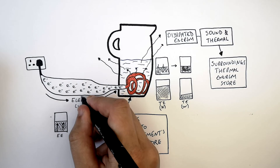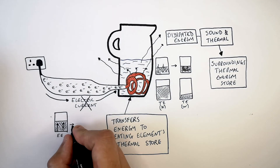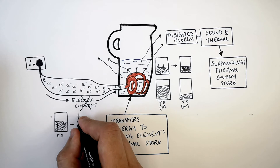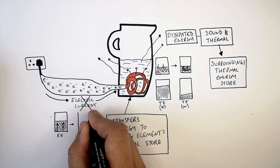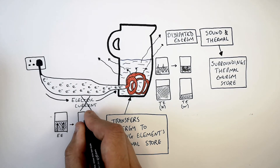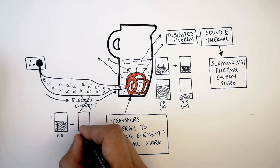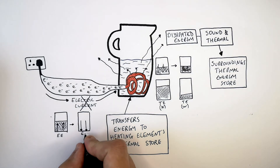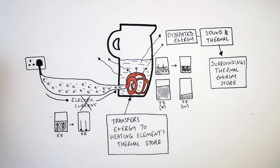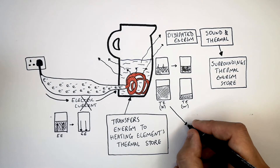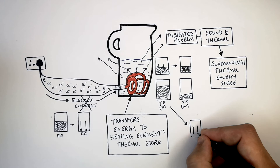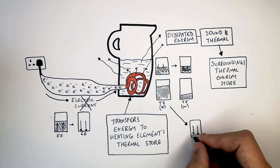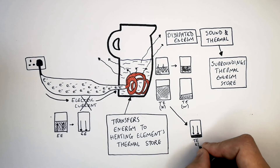Let's now imagine we've switched off the kettle. That means we have decreased the flow of electrons, a current, to the heating element of the kettle, which means that there is no electrical energy being transferred from the electrical store to the thermal store of the heating element. As you can see here, the thermal energy store of the kettle's heating element is going to decrease.